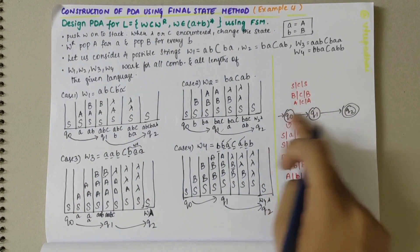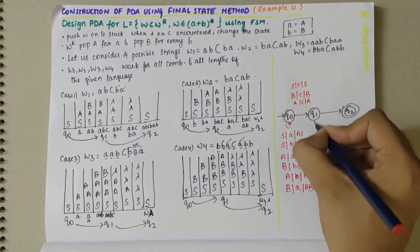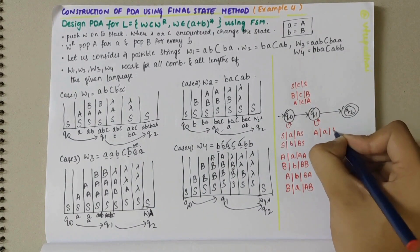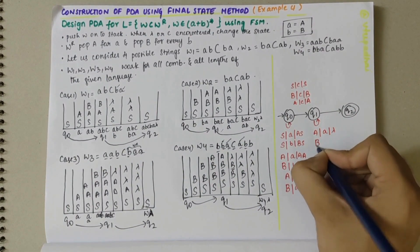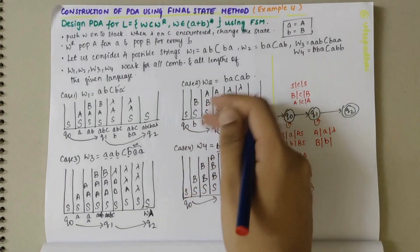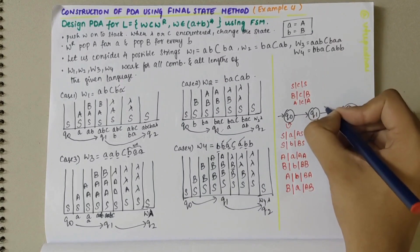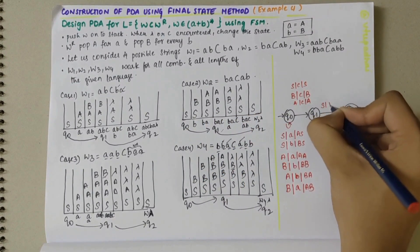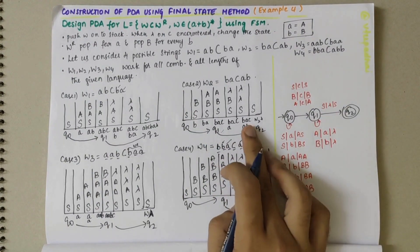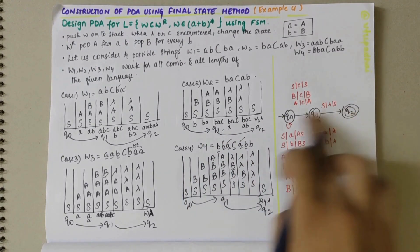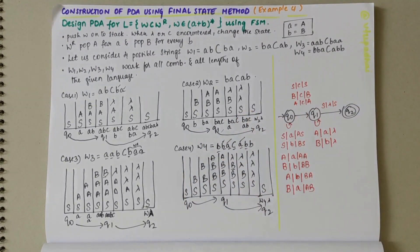For the Q1 self-loop: if A is on top of stack and small 'a' is encountered, replace A by lambda. If B is on top and small 'b' is taken as input, replace B by lambda. For the Q1 to Q2 transition: S, lambda, S — when S is on top and lambda is read as input, the state changes from Q1 to Q2, with contents remaining S.